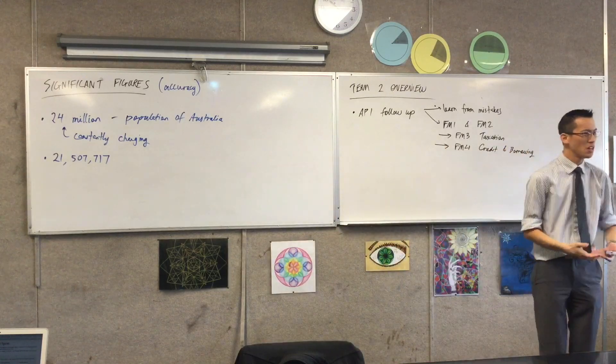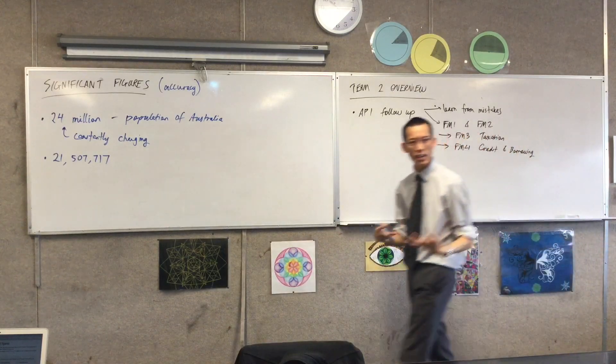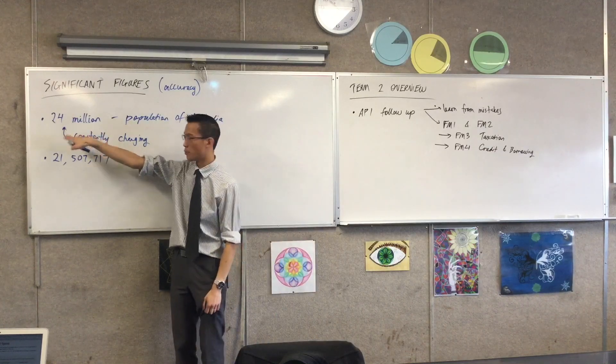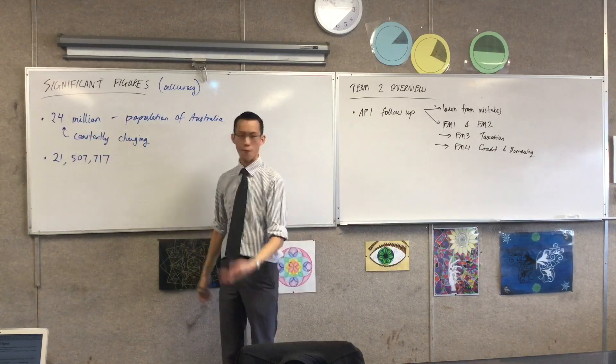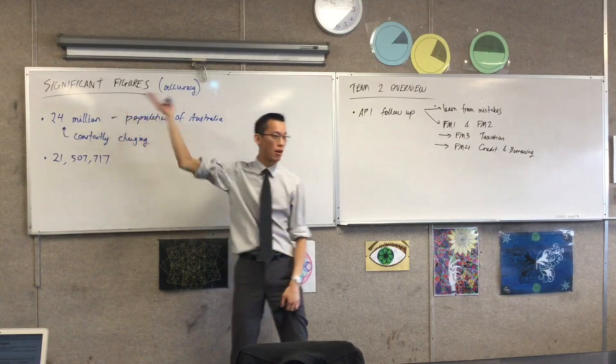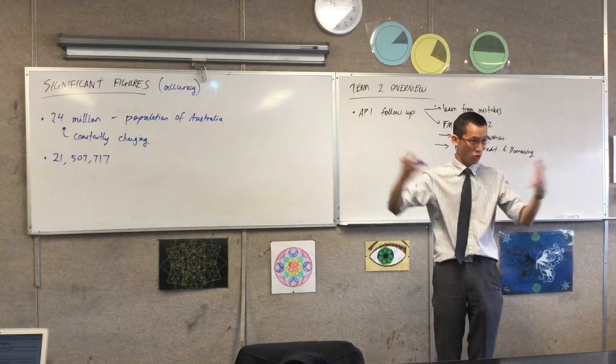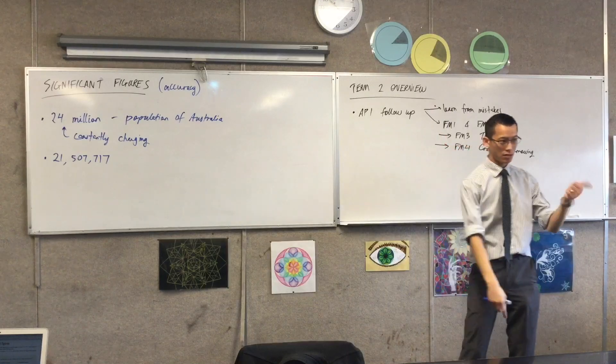Even if we did have an exact number for the population, is it that useful to us? Not so much. Like, what planning could you do with the exact number, 24 million and whatever, versus what planning you can do with the approximate number that would make a huge difference? Probably not that much when you're working on these scales. So, that's the first thing. It's constantly changing.